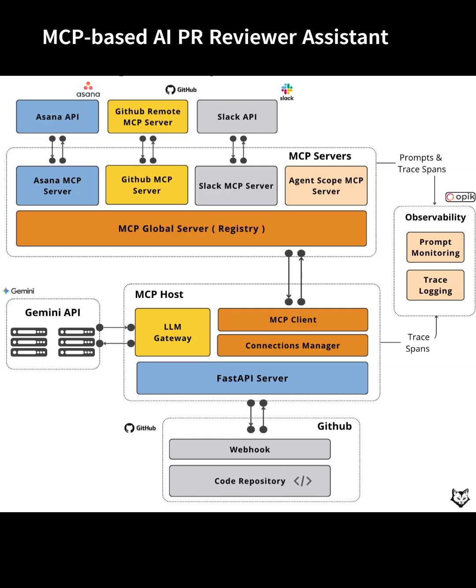Architecture breakdown: The core structure centers around an MCP host, which is a FastAPI application connected to a Gemini LLM and orchestrated via webhooks triggered by GitHub PR events. The MCP host leverages a global MCP server registry that aggregates tool definitions from specialized MCP servers — GitHub code and PR tools, Asana task management.